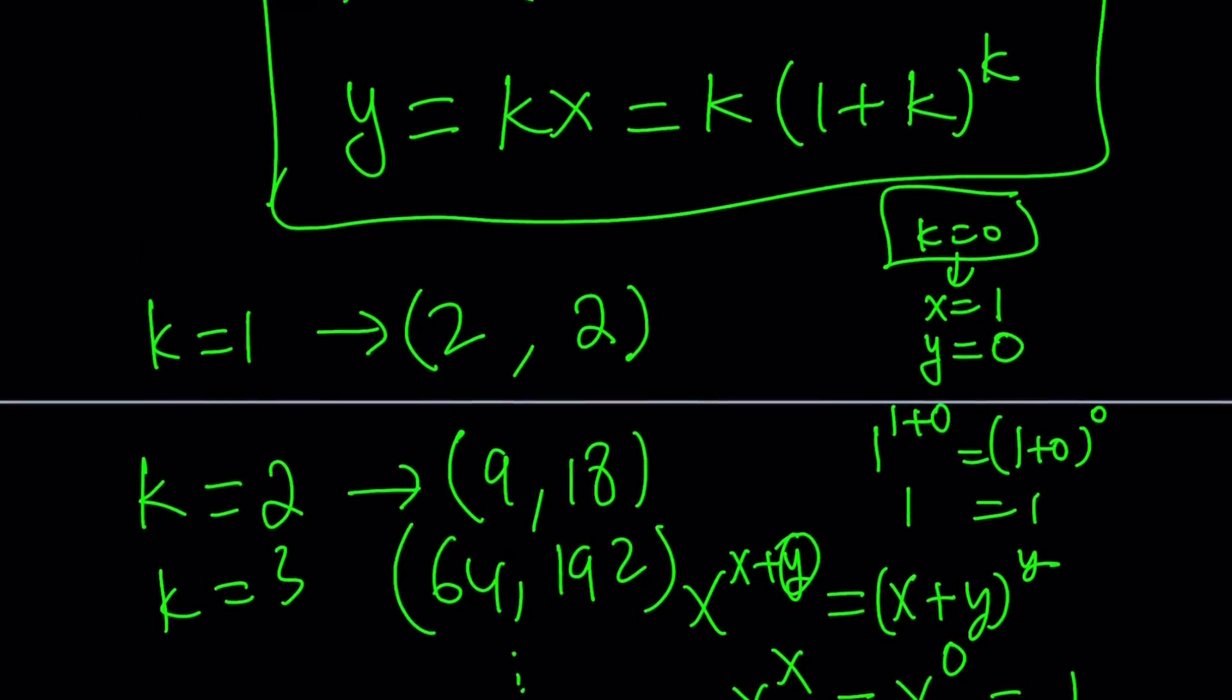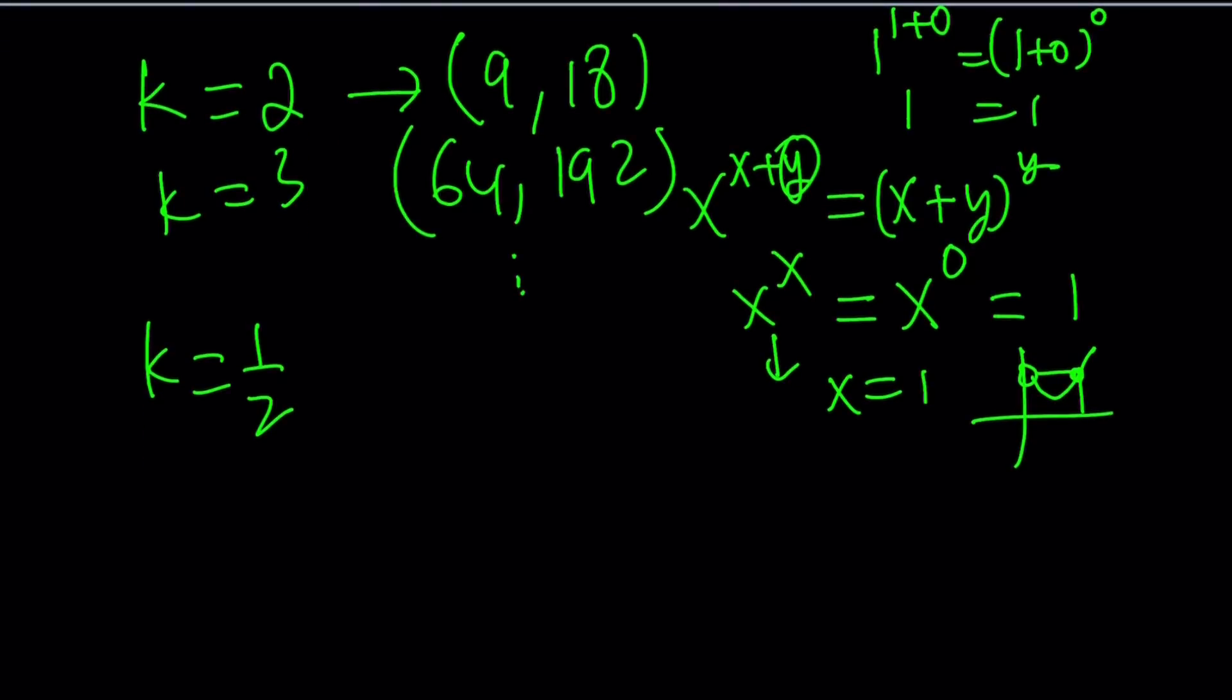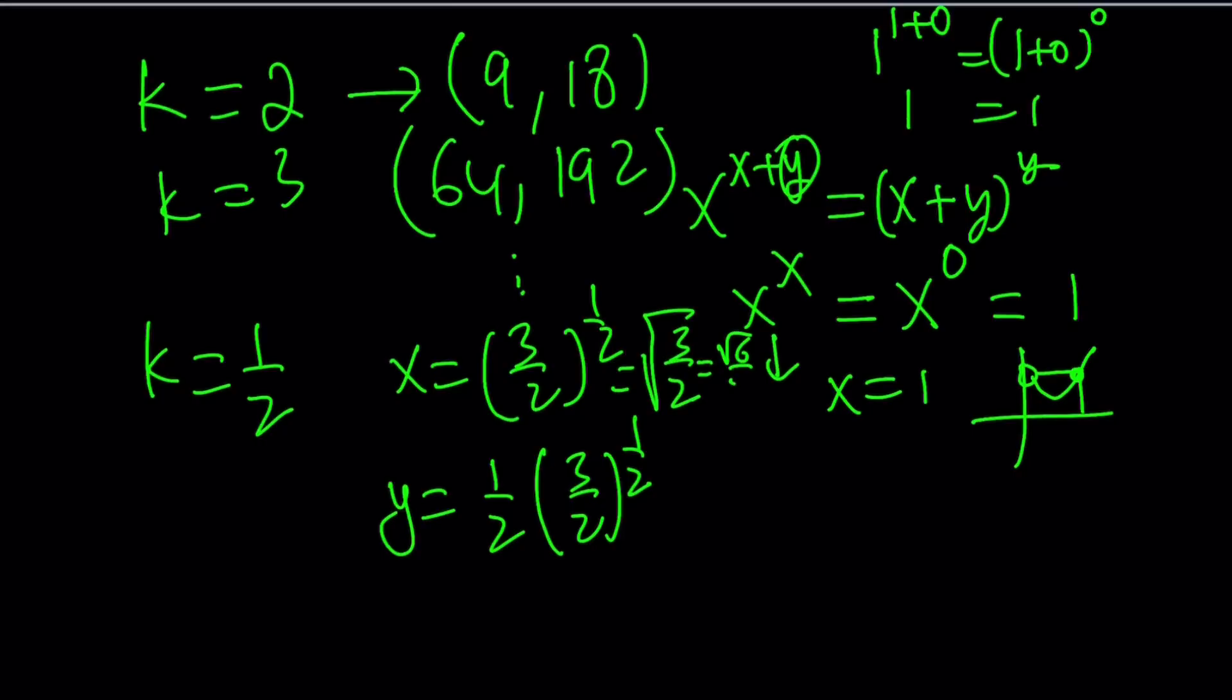x is going to be three halves to the power one half. And y is just going to be one half times that. What is three halves to the power one half? It just means the square root of three halves which can be written as root six over two. And this can be written as root six over four. So those irrational numbers are also going to work in our equation because we're looking for real solutions.